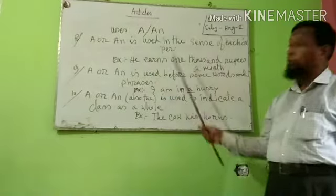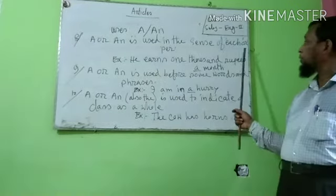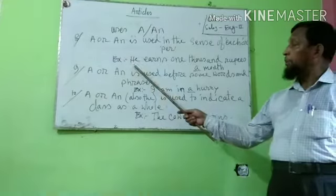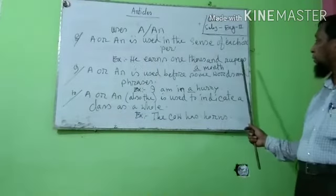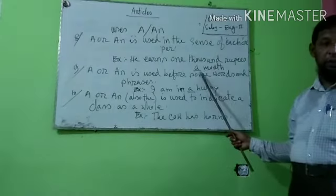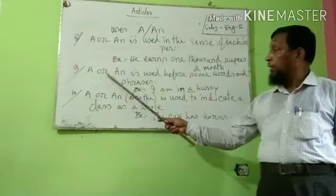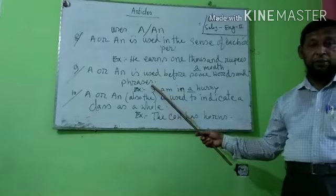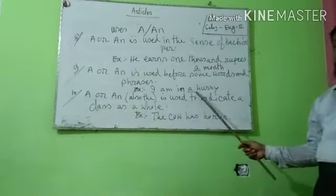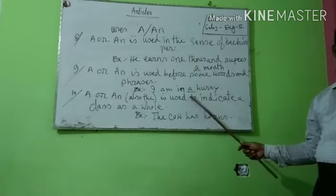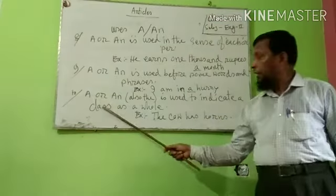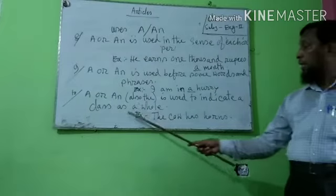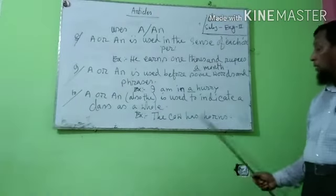Number eight: A or AN is used in the sense of 'per' or 'each'. Example: He earns one thousand rupees a month. Number nine: A or AN is used before some words like 'hurry'. Example: I am in a hurry.